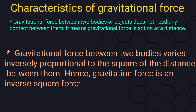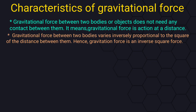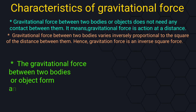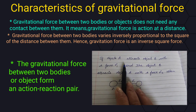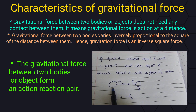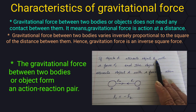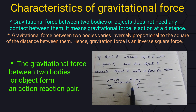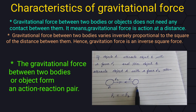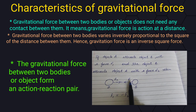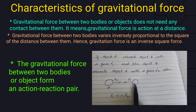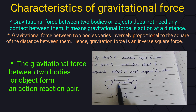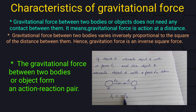The gravitational force between two bodies or objects forms an action-reaction pair. If object A attracts object B with force F1, and object B attracts object A with force F2, then F1 is equal to minus F2.